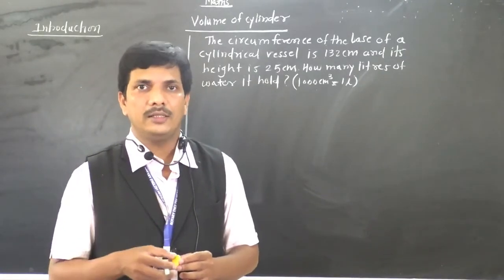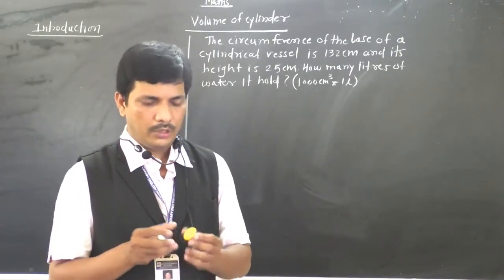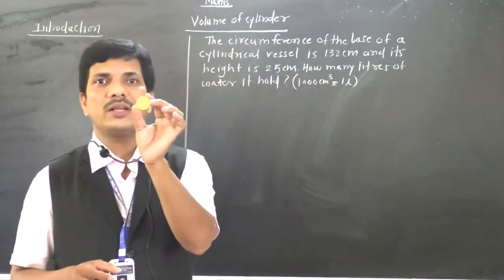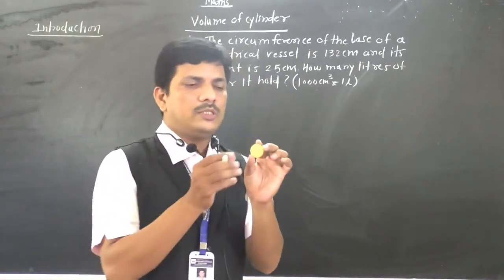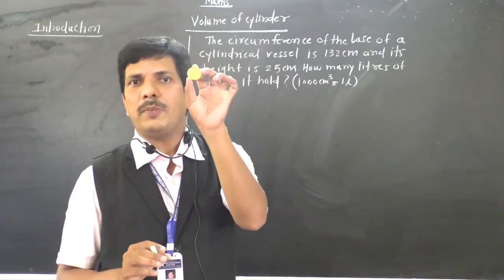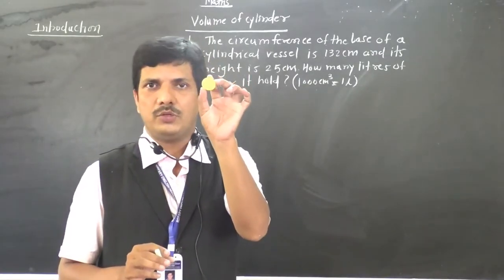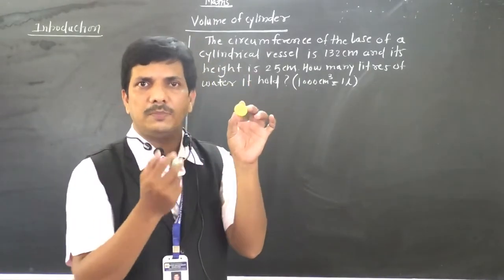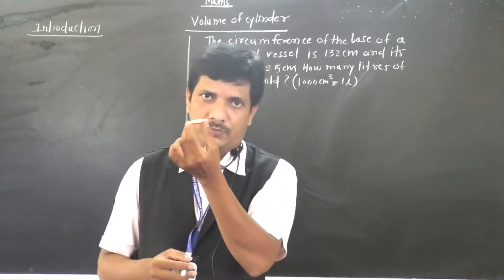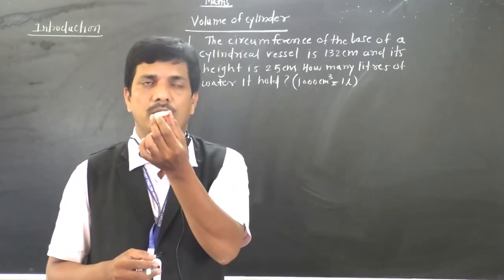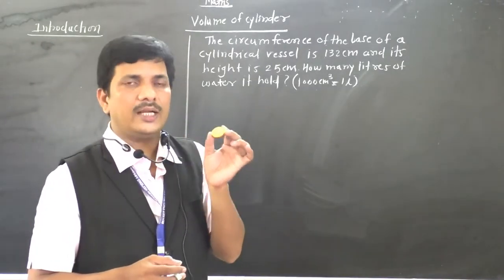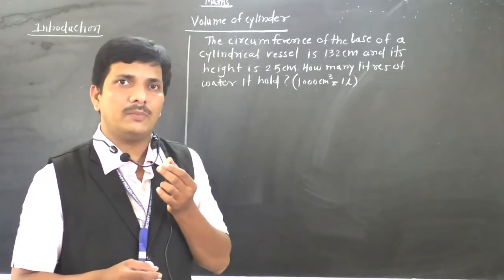But how practically? That we are going to see now. So see here, I have a circular ring. If you see this circular ring, the area of this ring will be pi r square. Everybody knows the area of a circle is pi r square. Because the thickness is negligible, we don't consider the thickness here, so area we can directly write as pi r square.